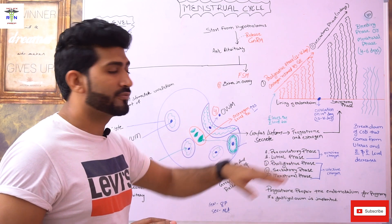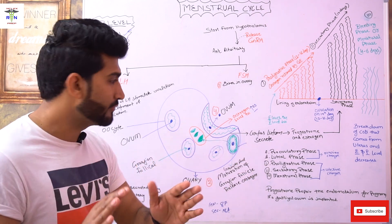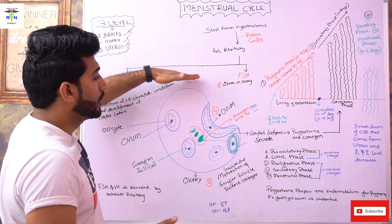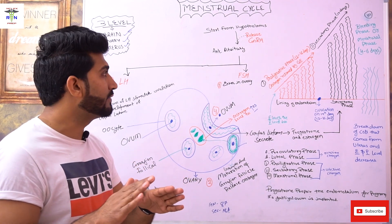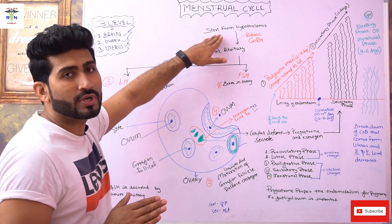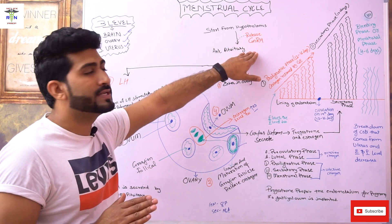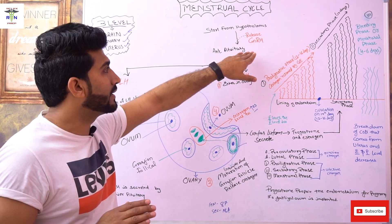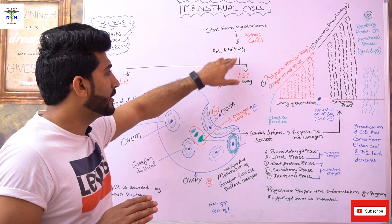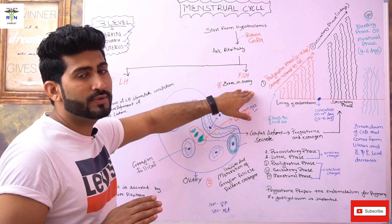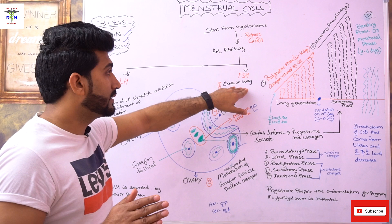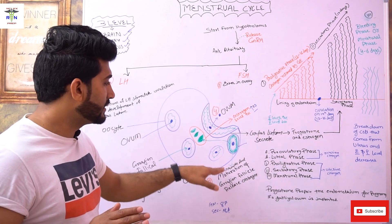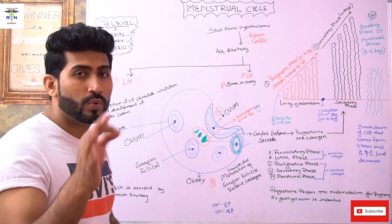The pre-ovulatory phase and luteal phase involve ovarian changes. The menstrual cycle starts from the hypothalamus, which releases the GnRH hormone through the portal system to the anterior pituitary. As soon as GnRH reaches the anterior pituitary, it releases FSH — follicle stimulating hormone — which then enters the ovary and stimulates the growth and maturation of Graafian follicles.